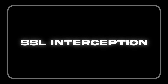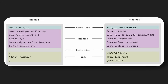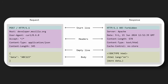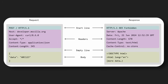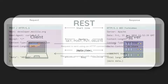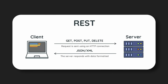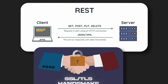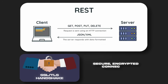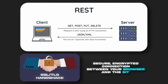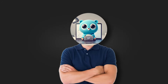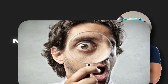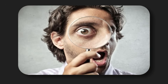Now, what is SSL interception? Normally, when you access a website using HTTPS — like https://example.com — your browser performs a TLS handshake directly with the website server. This handshake establishes a secure encrypted connection between your browser and the site, meaning no one in the middle — not even your ISP or network admin — can see the actual contents of your traffic.